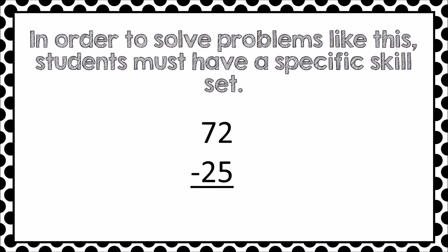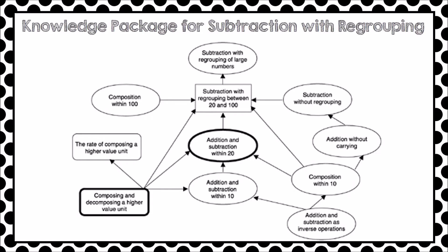In order to solve problems like this, students must have a specific skill set called a knowledge package. In the book Knowing and Teaching Mathematics, Liping Ma asked both American and Chinese teachers how they would approach the problem 72 minus 25. Many of the American teachers mainly jumped into explaining the procedure. However, many of the Chinese teachers talked about a knowledge package and the precursor skills needed to teach such a problem.